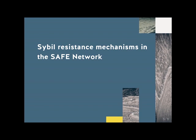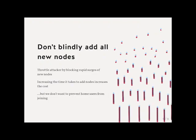There are a few approaches we can use which together form an effective defense against Sybil attacks. More precisely we can accomplish this by: first, not blindly adding all new nodes that want to join; second, relocate nodes to prevent clustering of malicious nodes; third, require nodes to contribute to the network and prove their reliability before being able to assert any meaningful influence. Now let's take a closer look at these.